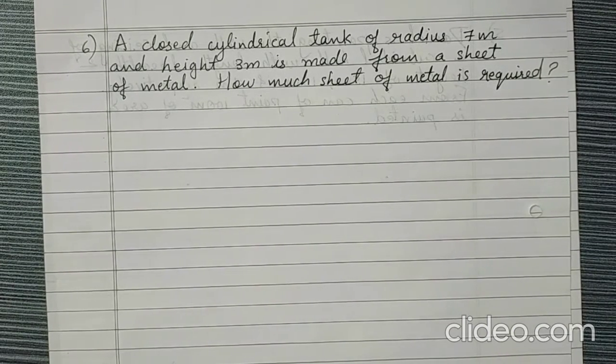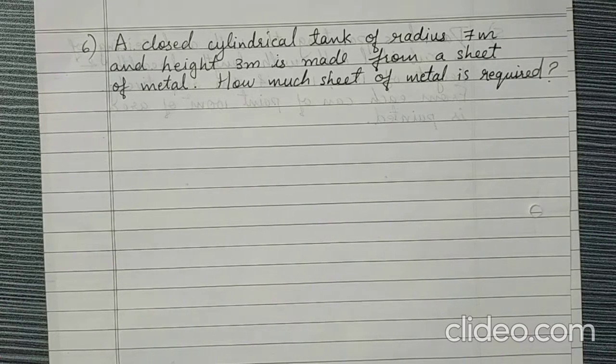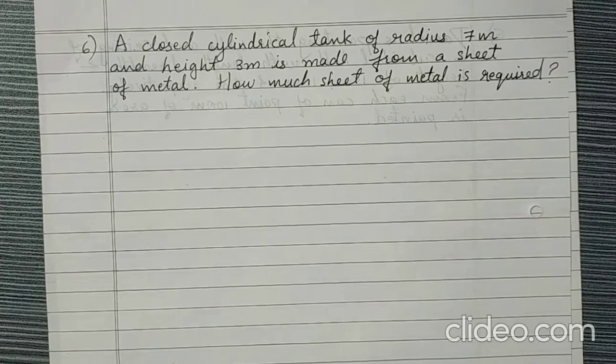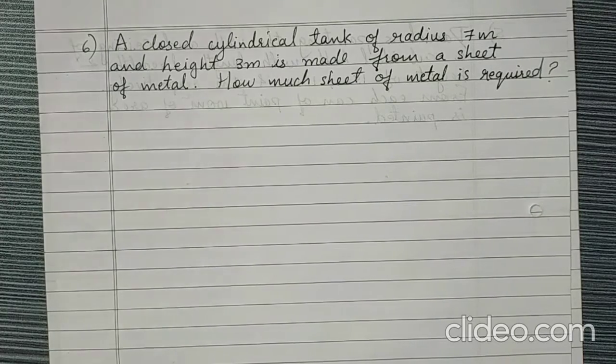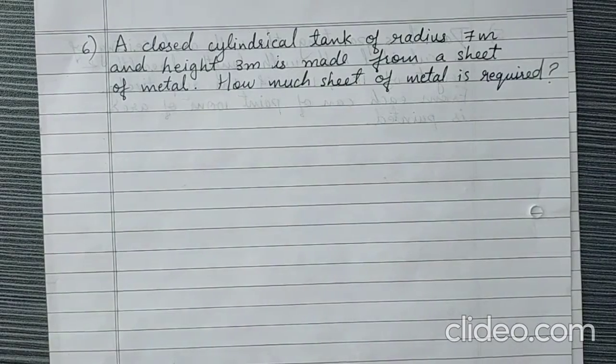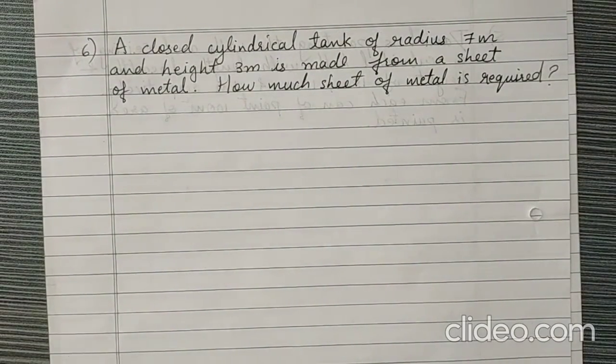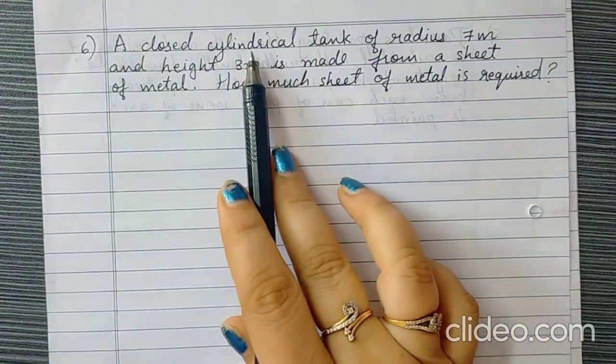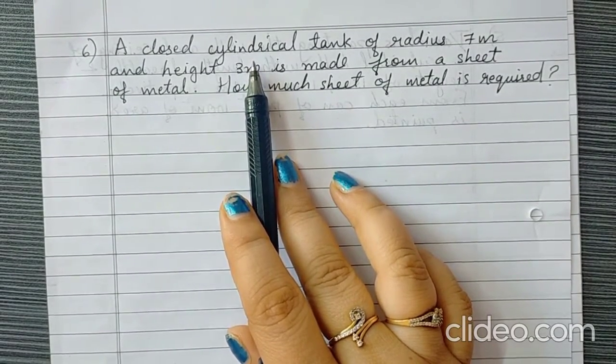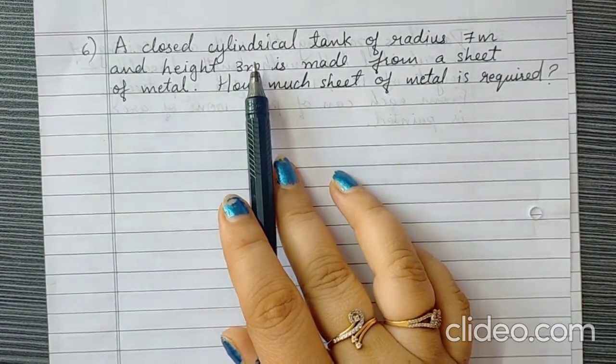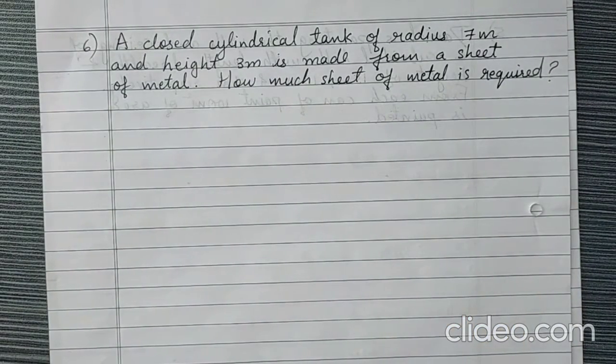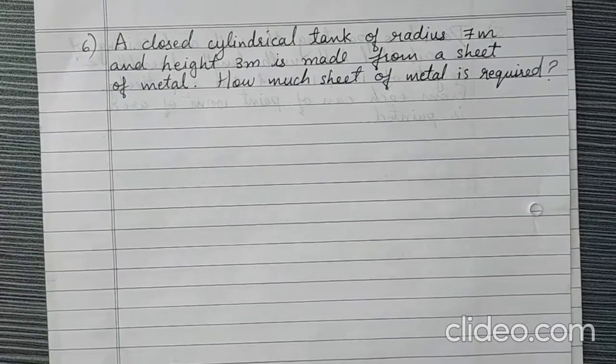Now for cylinder we have to use the lateral surface area of cylinder and lid also. So we are going to calculate total surface area. Because the entire cylinder is being made from a sheet, so to make the cylinder we need the base and top as well. Right? So we are going to calculate total surface area of cylinder.